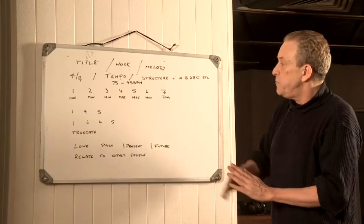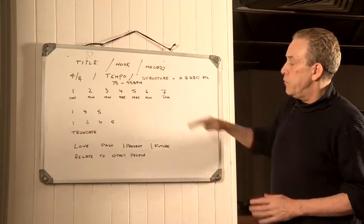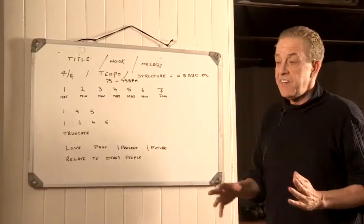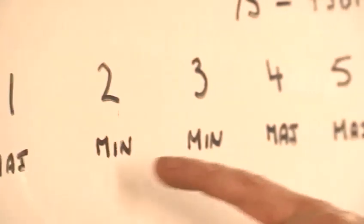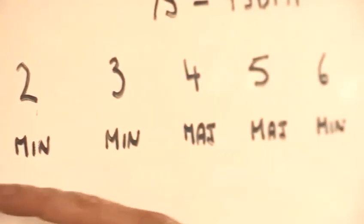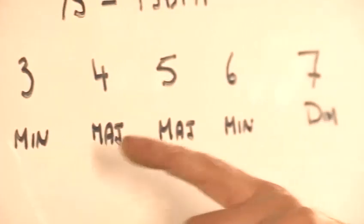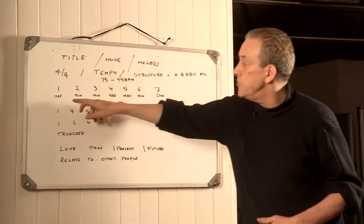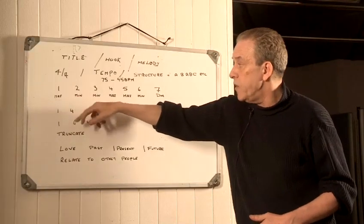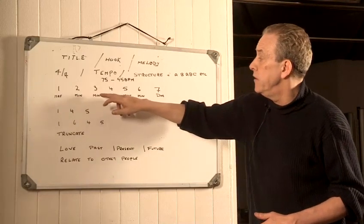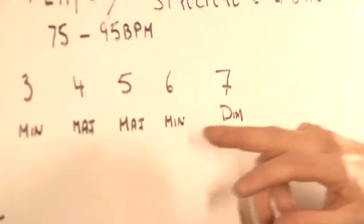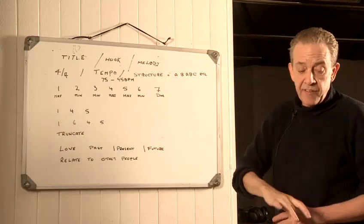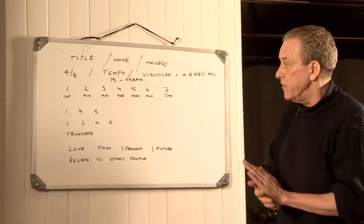Just below here we have something that's very very important. If I'm working in the key of C, or any key, we work on the different stages of the scale. So you've got major is number 1, then minor, minor, major, major, minor, and diminished — that's the 7 stages of the scale.